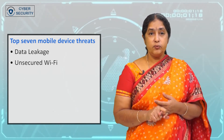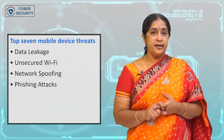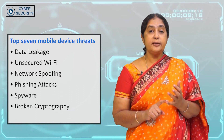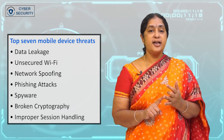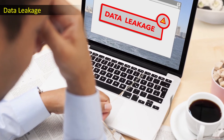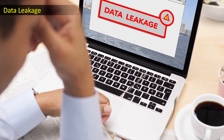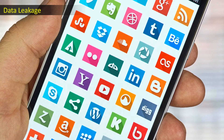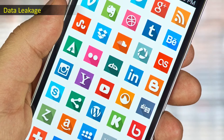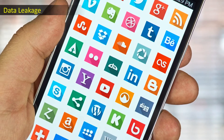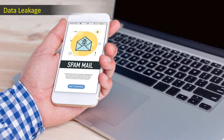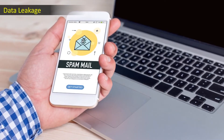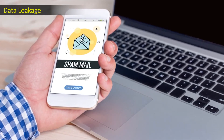The top seven mobile device threats are: data leakage, unsecured Wi-Fi networks, network spoofing, phishing attacks, spyware, broken cryptography, and improper session handling. Data leakage refers to the leaking of confidential data without specific intention. This mainly takes place through mobile apps, mostly free apps that are officially advertised in application markets.